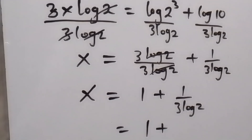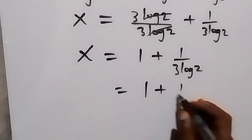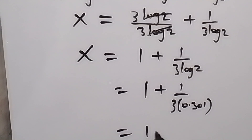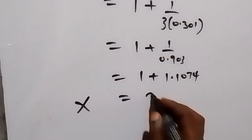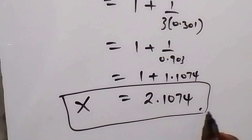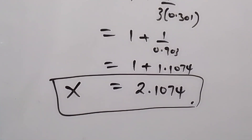Substituting log 2 equals 0.301 as before, we get x equals 1 plus 1 over 3 times 0.301, which is 1 plus 1 over 0.903, giving 1 plus 1.1074. Therefore x equals 2.1074. Don't forget to subscribe so as not to miss any of my videos. Thank you, see you in the next class.